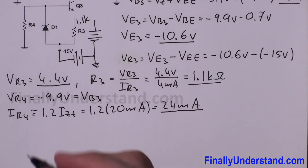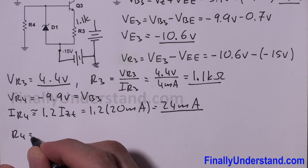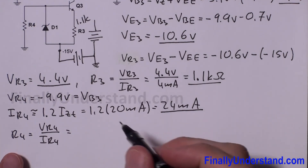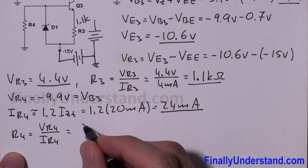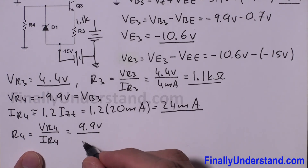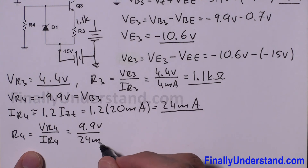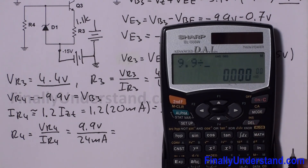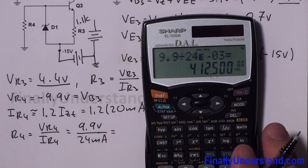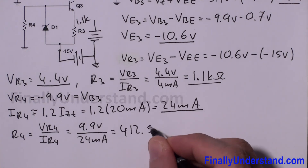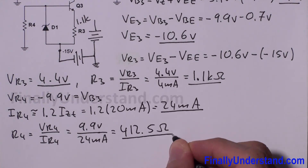Now I can find R4. R4 equals VR4 over IR4. Using the absolute value of VR4 = 9.9 volts, divided by IR4 = 24 milliamps: R4 = 9.9 / 0.024 = 412.5 ohms.